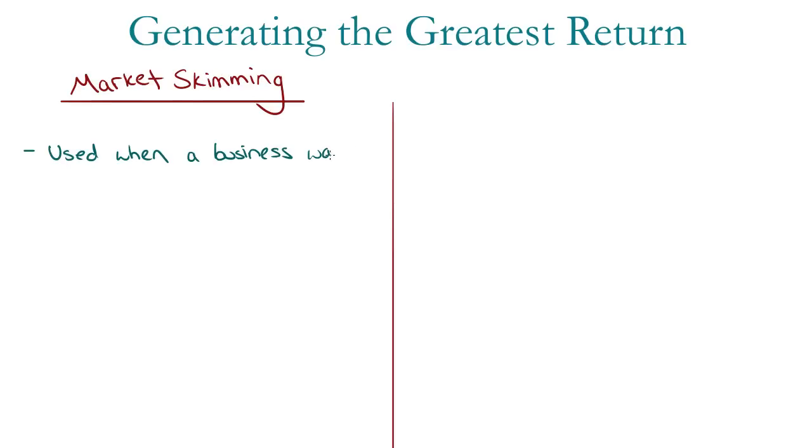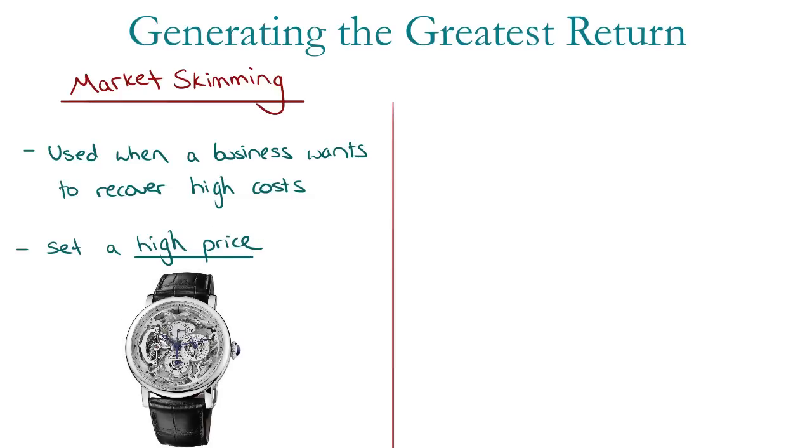Now, let's look at strategies that generate the greatest return. Market skimming, which is used by a business when it wants to recover the high costs involved in establishing a product and releasing it onto a marketplace. It does this by setting a really high price. If I launched a new and exclusive brand of watches, I could skim the price of them to make them look and feel really luxurious.